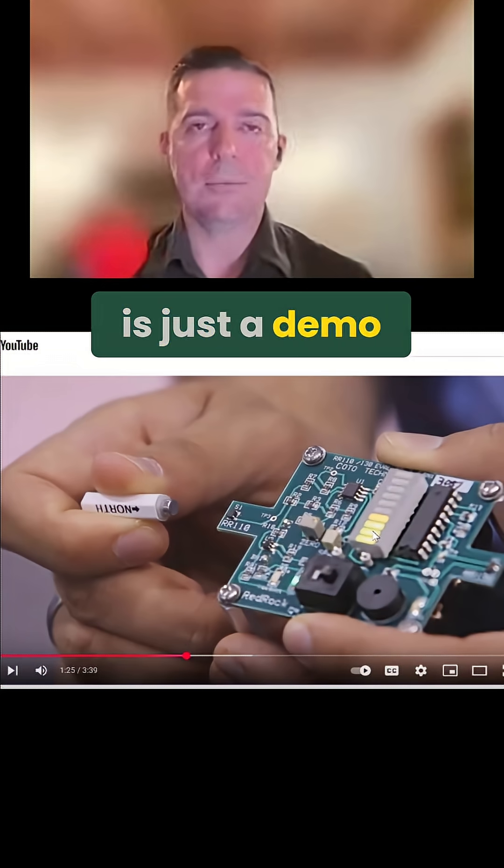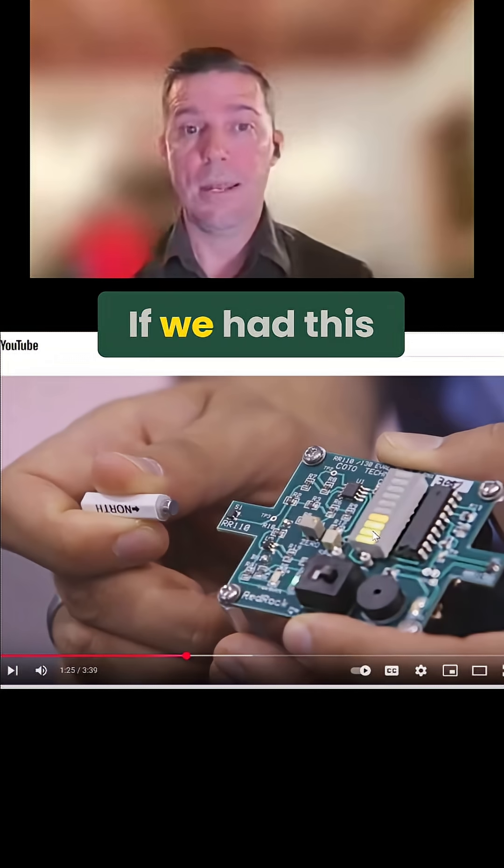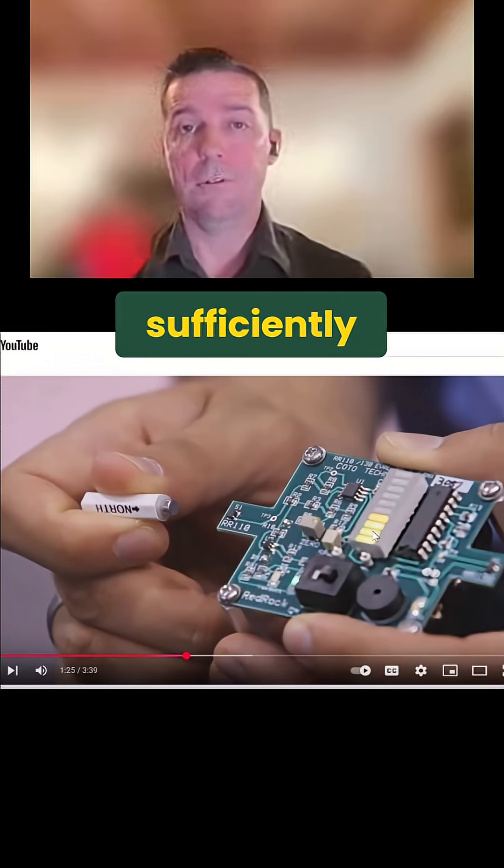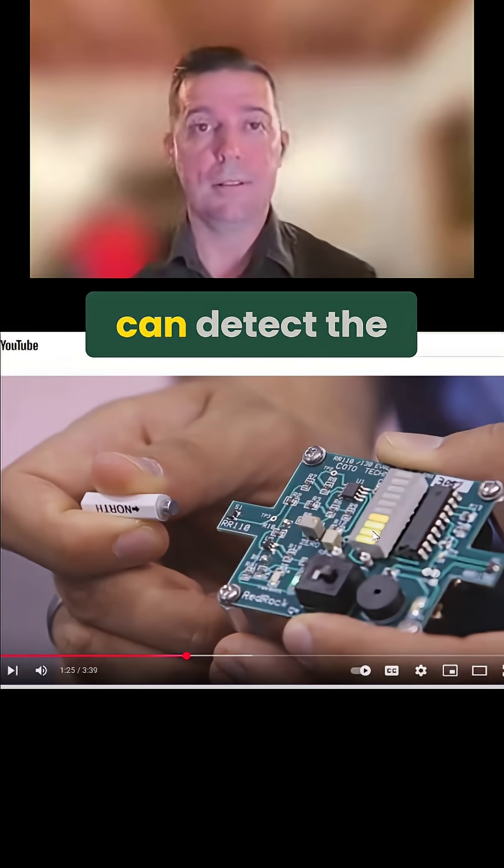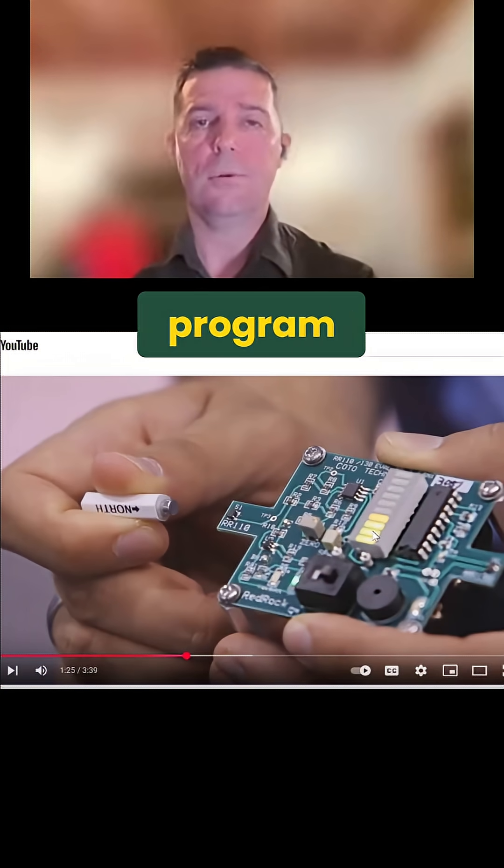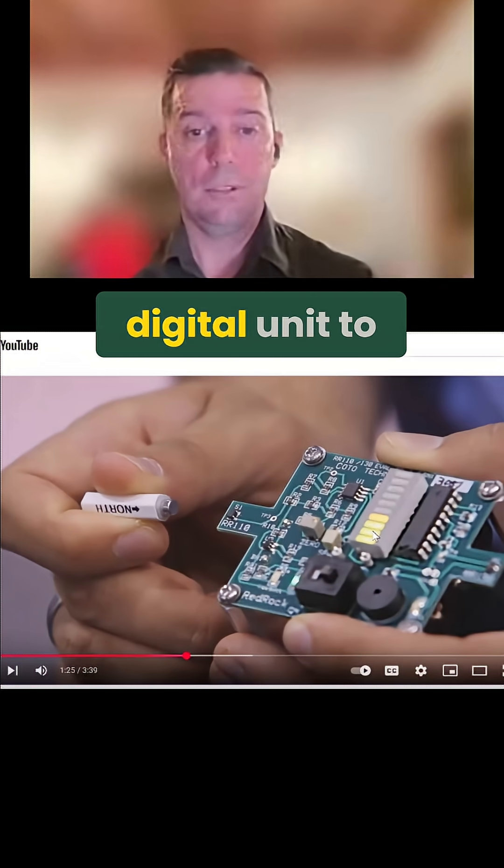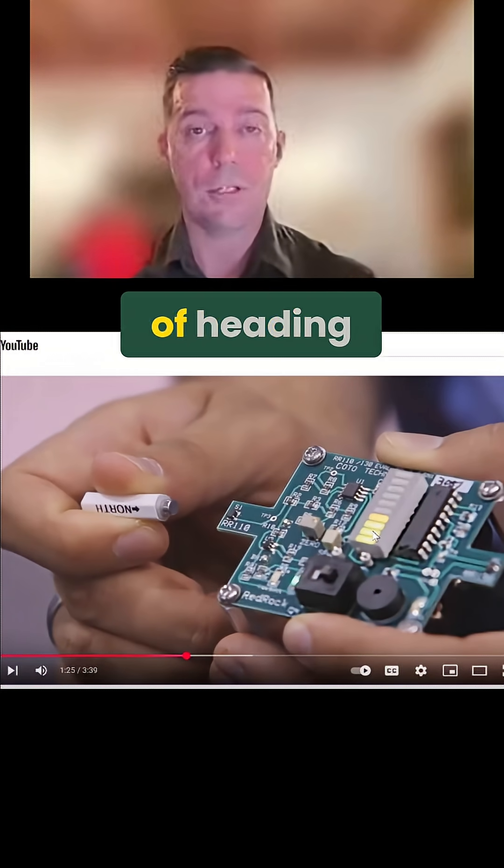I'm sure this is just a demo unit, but you can see the usefulness of this. If we had this mounted on an aircraft and it was sufficiently sensitive enough that it can detect the Earth's magnetic field, then you could easily program it to change a digital unit to show a change of heading instead of having it show those lights there.